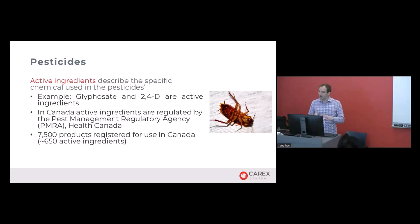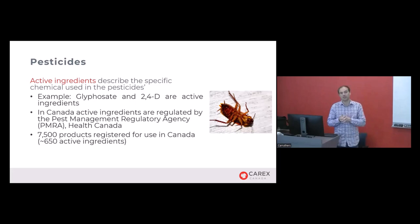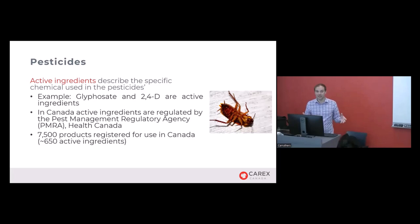In Canada, pesticides must be approved and regulated by the PMRA — the Pest Management Regulatory Agency — which is an arm's-length branch of Health Canada. There are over 7,500 pesticide products approved for use in Canada, incorporating over 650 active ingredients. Those 650 or so active ingredients are combined in different concentrations and mixtures to create the 7,500 products.